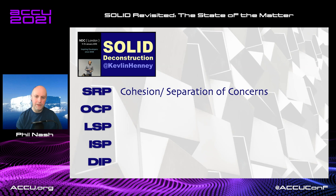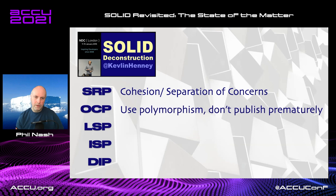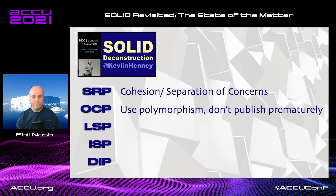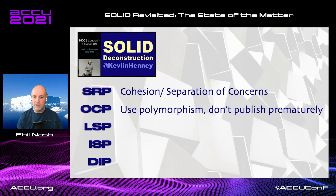The Open-Closed Principle, Kevlin argues, really boils down to: use polymorphism, and maybe don't publish prematurely. Because if you publish an interface — use it outside of your own codebase — then it's much harder to change. His real problem with OCP is it doesn't make that distinction. It just says that once something is written, you shouldn't change it, you should extend it — and that's not really the agile way. So is it semantics or is it a real concern? We'll dig into that a bit more, but let's continue with a summary of Kevlin's points.